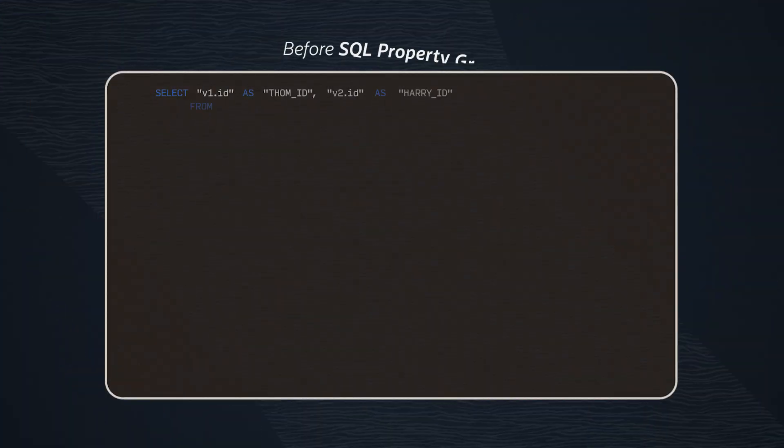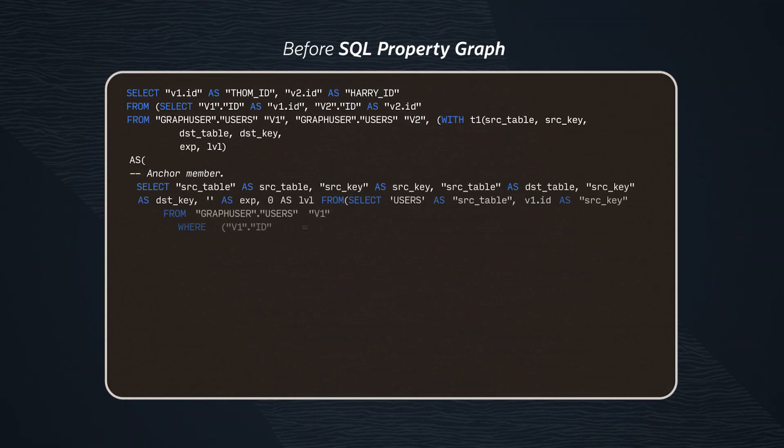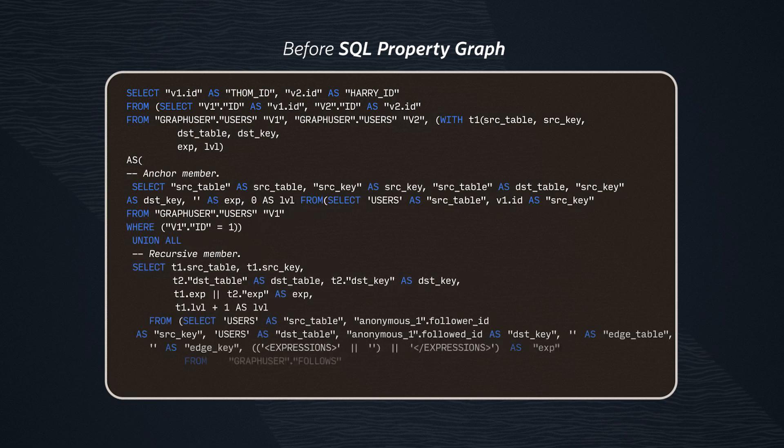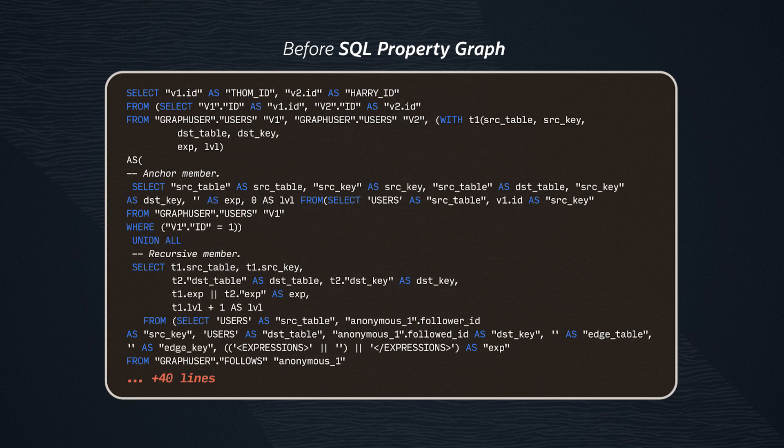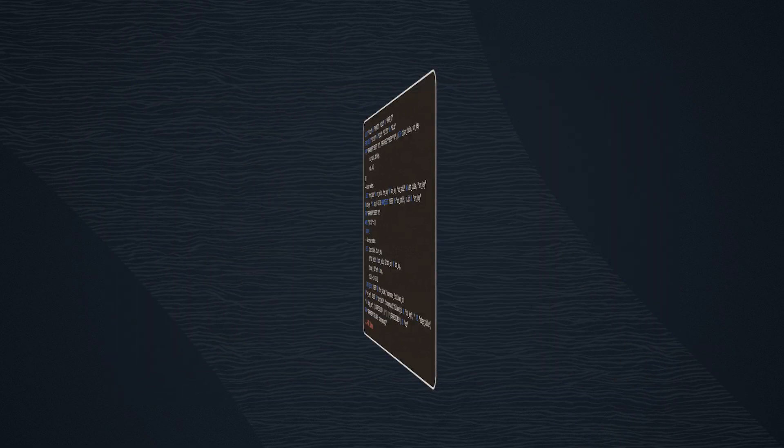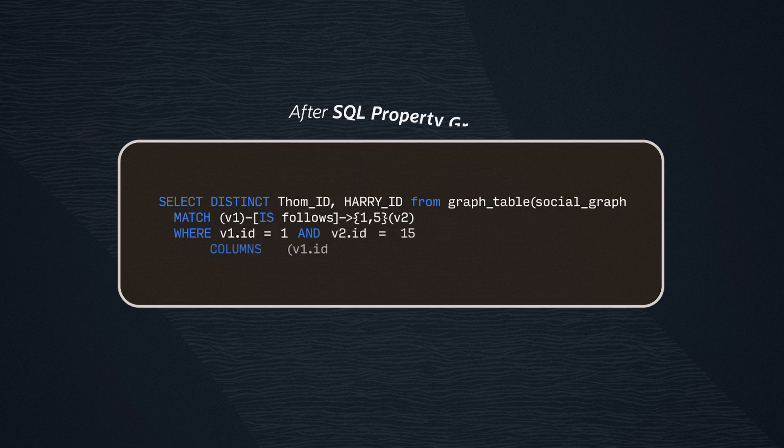With the new SQL syntax in Oracle Database 23AI, dozens of lines of code can be reduced to two or three lines. Complex joins and recursive queries can now be succinctly expressed, making it easier to uncover connections and insights that may have been overlooked.